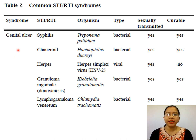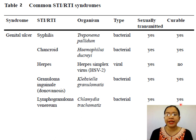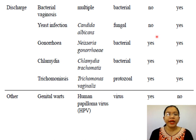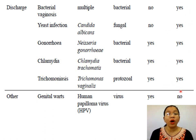In this table, we can see the common STI/RTI syndromes. If somebody presents with genital ulcer, there is a possibility the person may suffer from syphilis, chancroid, herpes, granuloma inguinale, or lymphogranuloma venereum—all sexually transmitted. Herpes simplex virus being viral is not curable; the rest are curable. If a person comes with discharge, possible diagnoses can be bacterial vaginosis, yeast infections, gonorrhea, chlamydia, or trichomoniasis—all curable since none are viral. However, bacterial vaginosis and yeast infections are not sexually transmitted; gonorrhea, chlamydia, and trichomoniasis are sexually transmitted.